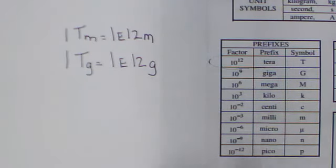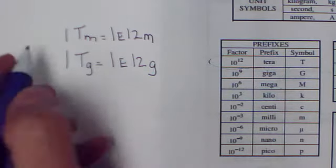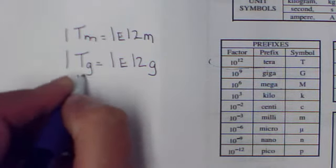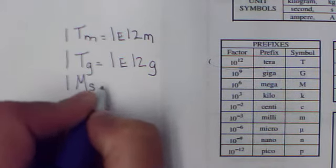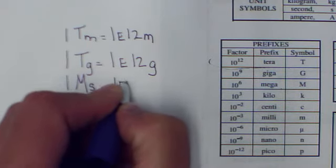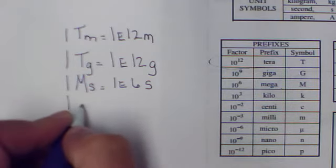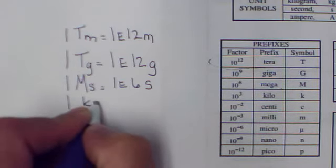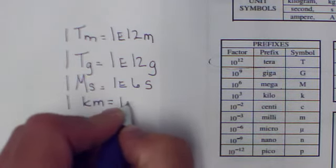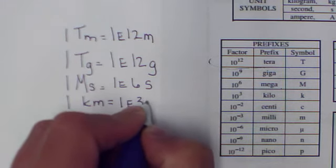Okay, let's look at mega. I could say 1 megasecond equals 1E6 seconds. I could say 1 kilometer equals 1E3 meters.